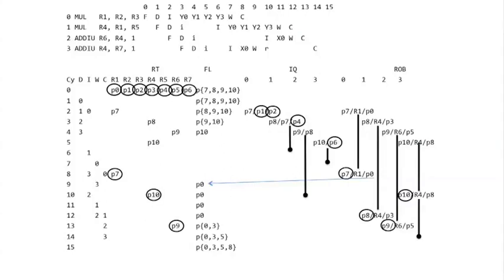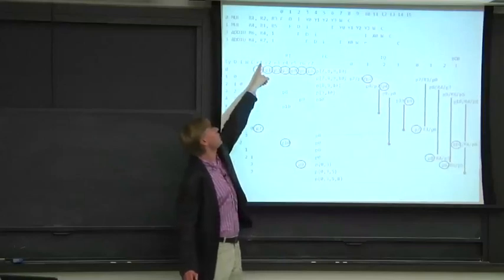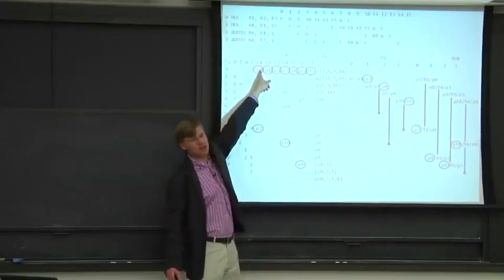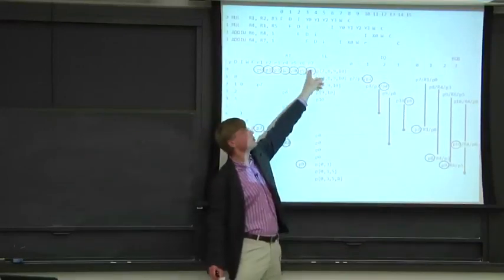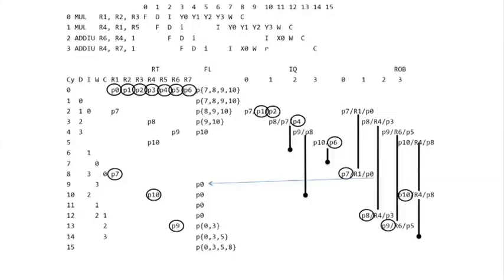We start with architectural register one mapped to physical register zero — just a base-case allocation where nothing is pending and the pipe has been idle. As we go to execute, interesting things happen. We issue the first instruction which writes to register one, so we rename it. In the rename table, register one gets renamed to physical register seven. So the rename table entry for register one now shows physical register seven as the updated location.